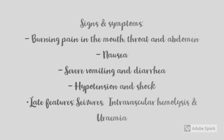The signs and symptoms of Ricinus poisoning: every kind of irritant poison presents with burning pain in the mouth, throat, and abdomen — tracing the tract through which it is ingested. Other signs include nausea, severe vomiting, and diarrhea, hypertension, and shock. Late features include seizures, intravascular hemolysis, and uremia.